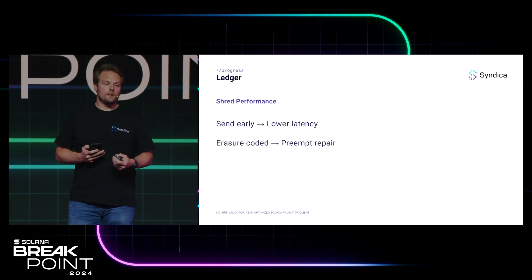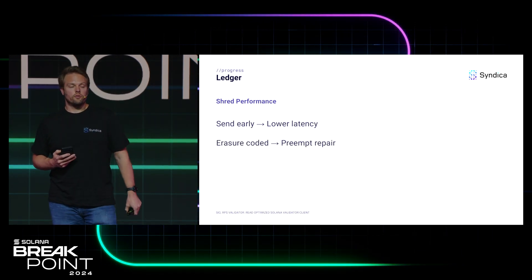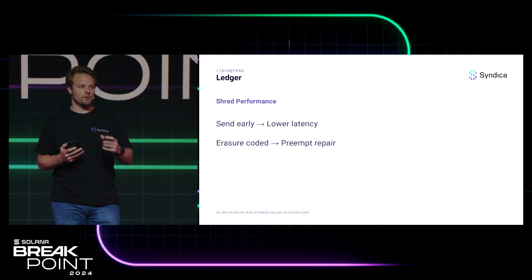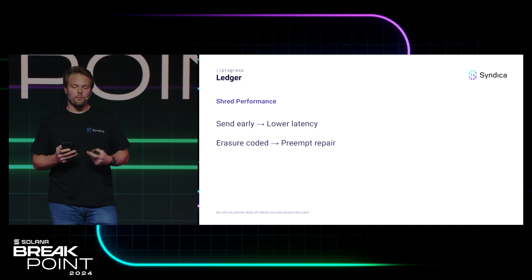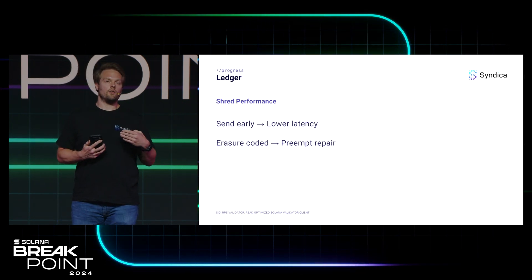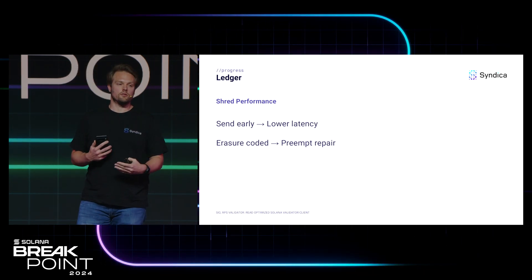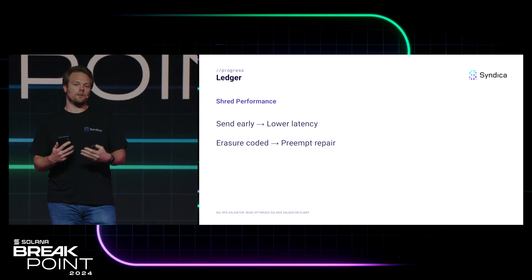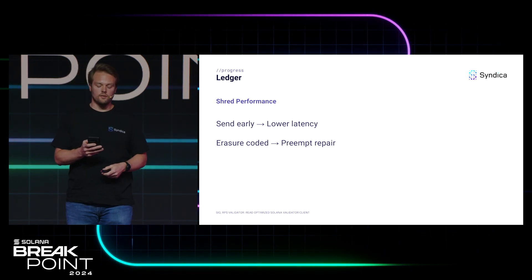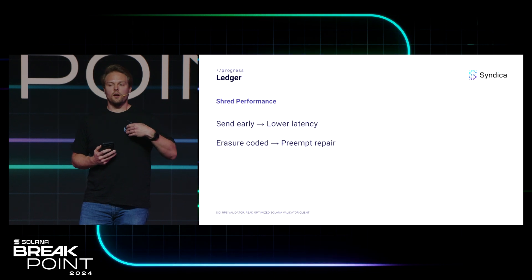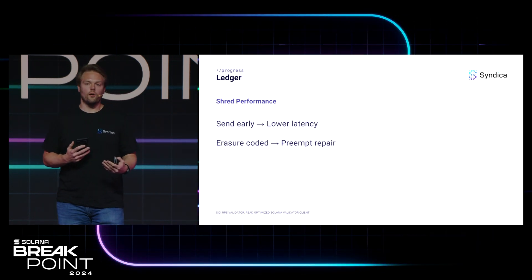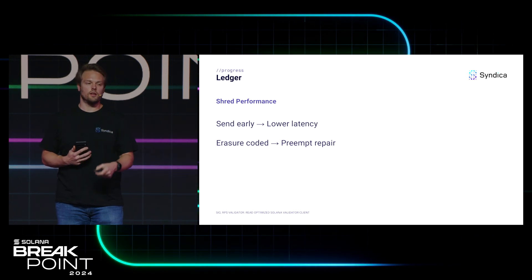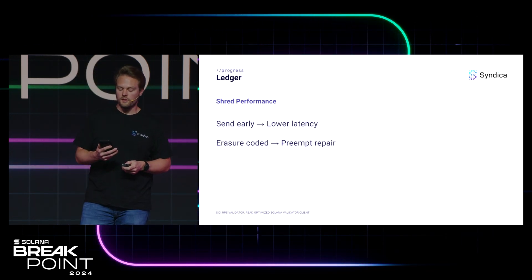Another way this accelerates Solana's performance is with erasure coding. Every single shred contains some redundant information, which means no validator needs to receive every single shred. They can receive some random subset of shreds over the network, and that's enough to recover the other shreds. They can then move forward without needing to send out a request for missing shreds and wait for a response — it really accelerates performance.